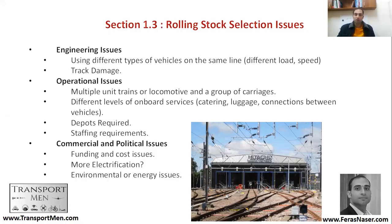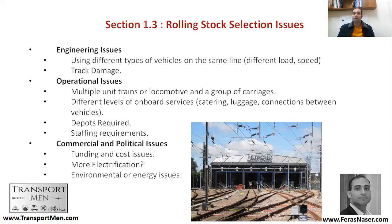For the engineering issues, examples include looking at the type of vehicles based on the load they are going to bring to the infrastructure, as well as the speed and the potential track damage. You would also be looking at energy consumption, and whether they have the right features — for example, a train with a tilting movement is different than a train without tilt.